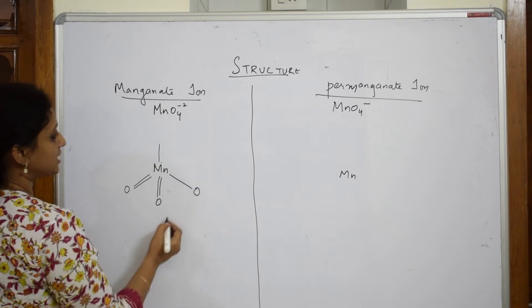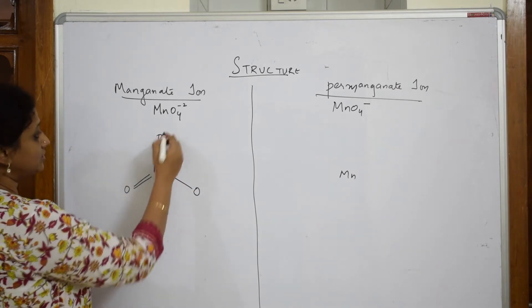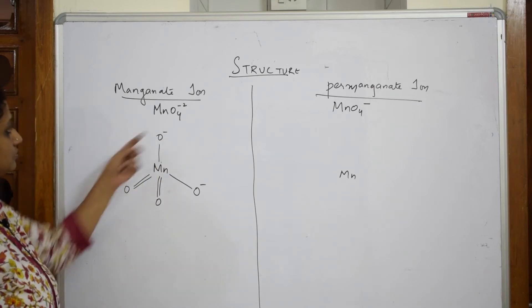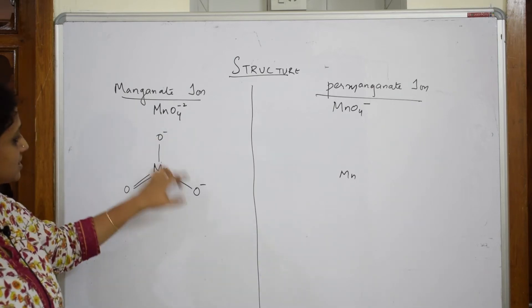Now, one oxygen atom here, one oxygen atom here, minus and minus. Four done. So, minus two is the charge.